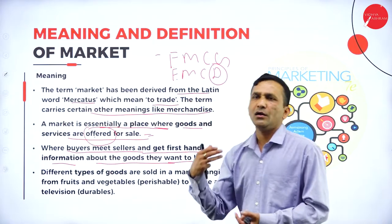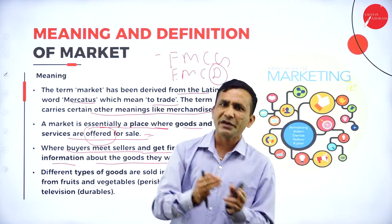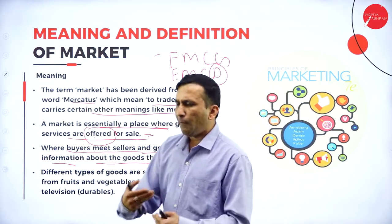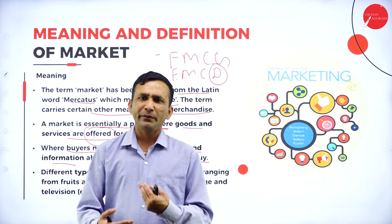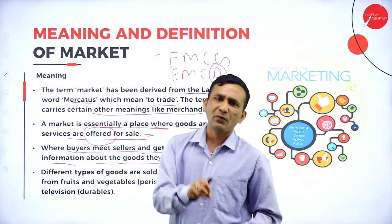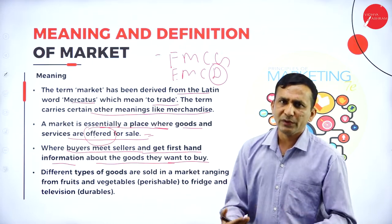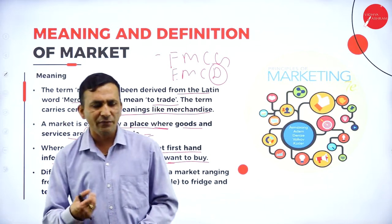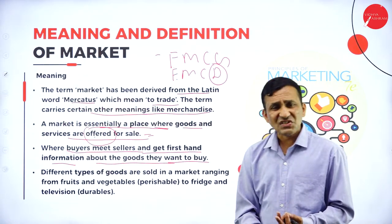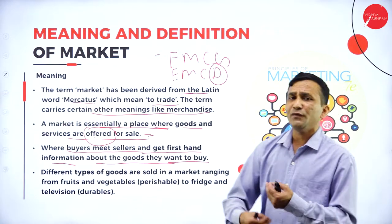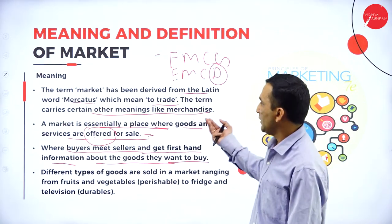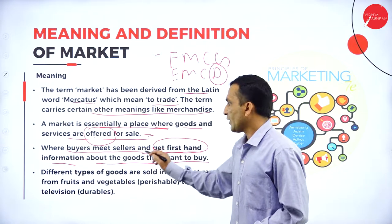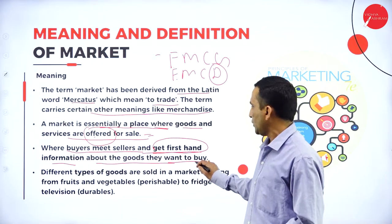Comparing FMCG and FMCD: the life span is very less for FMCG, but durability is more for FMCD because the durability extends for a longer period. Examples of durable products include a fridge or television. As a buyer, I want to get more information about features, price, availability, and after-sales service — that is firsthand information.